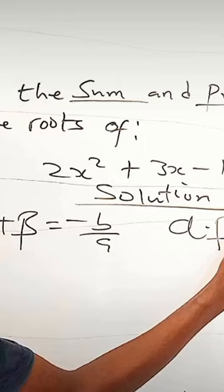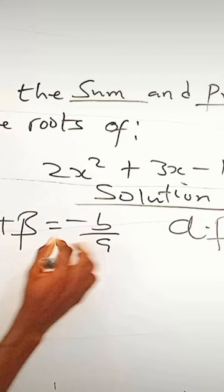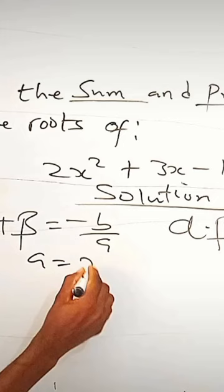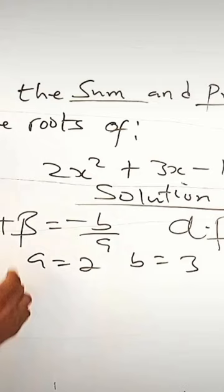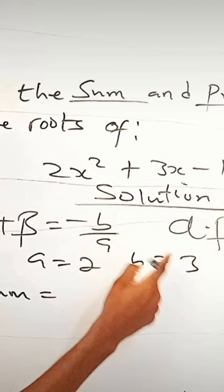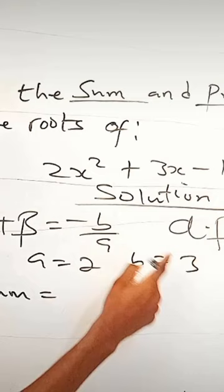So calculate the sum of the roots and the product of the roots. In this case, our a is 2, our b is 3, our c is minus 1. So the sum of the roots is minus b — our b is 3 — which is minus 3 over a, which is 2. That is minus 3 over 2.